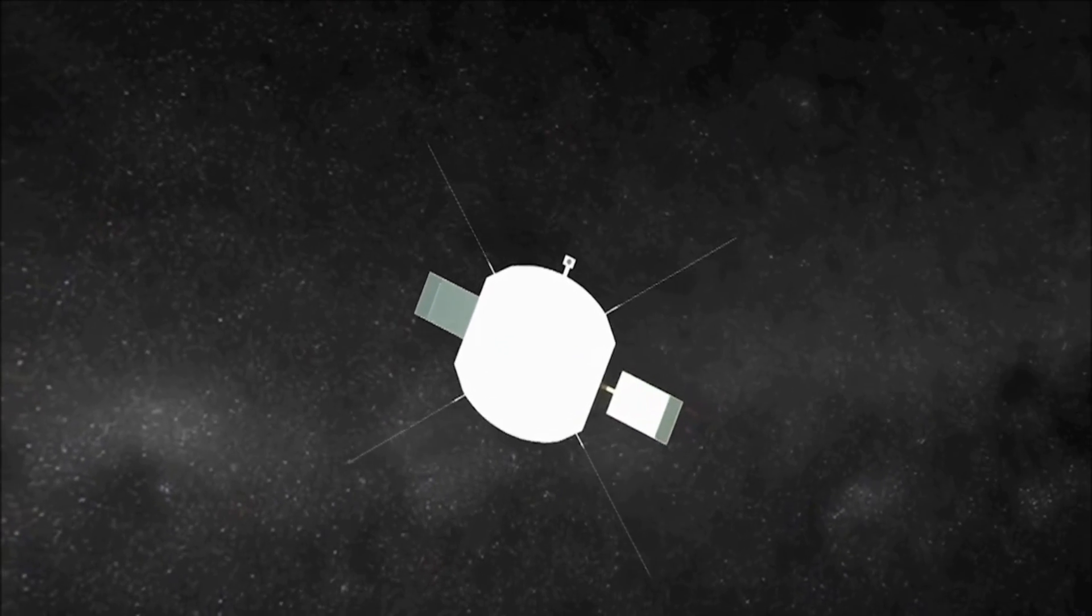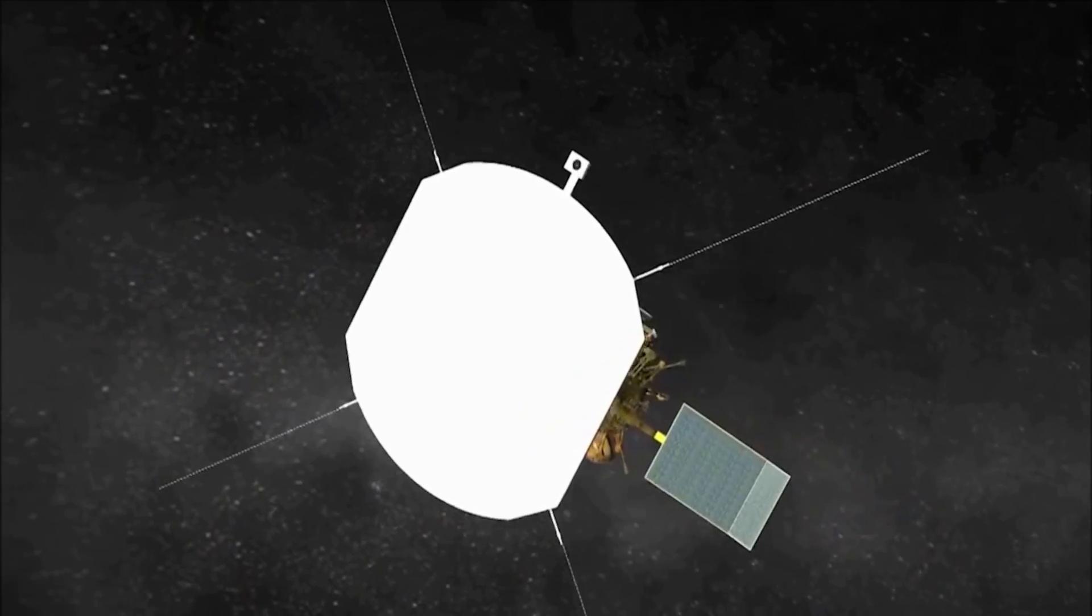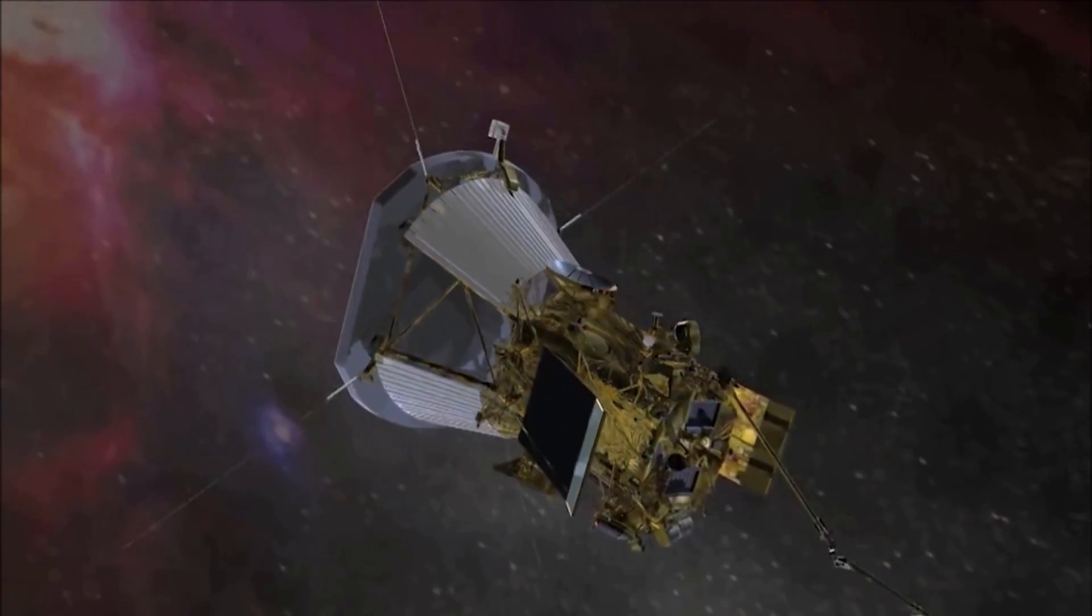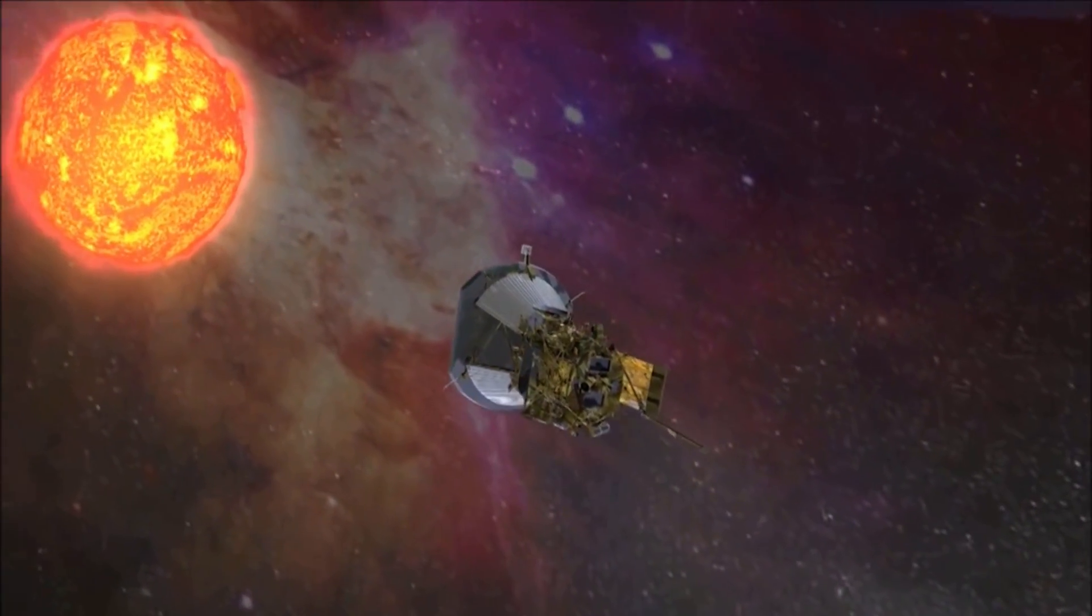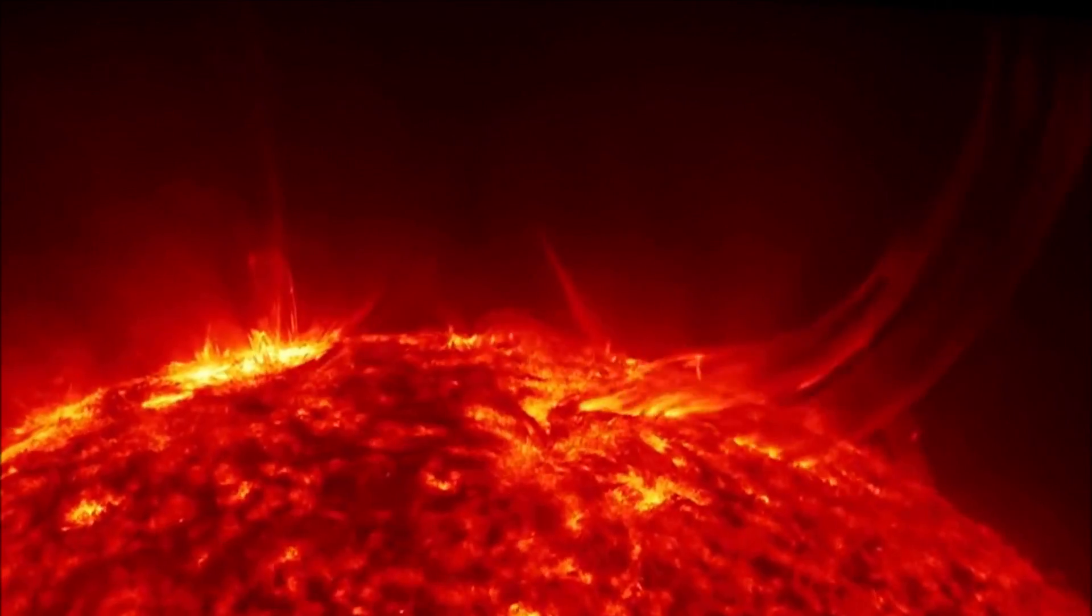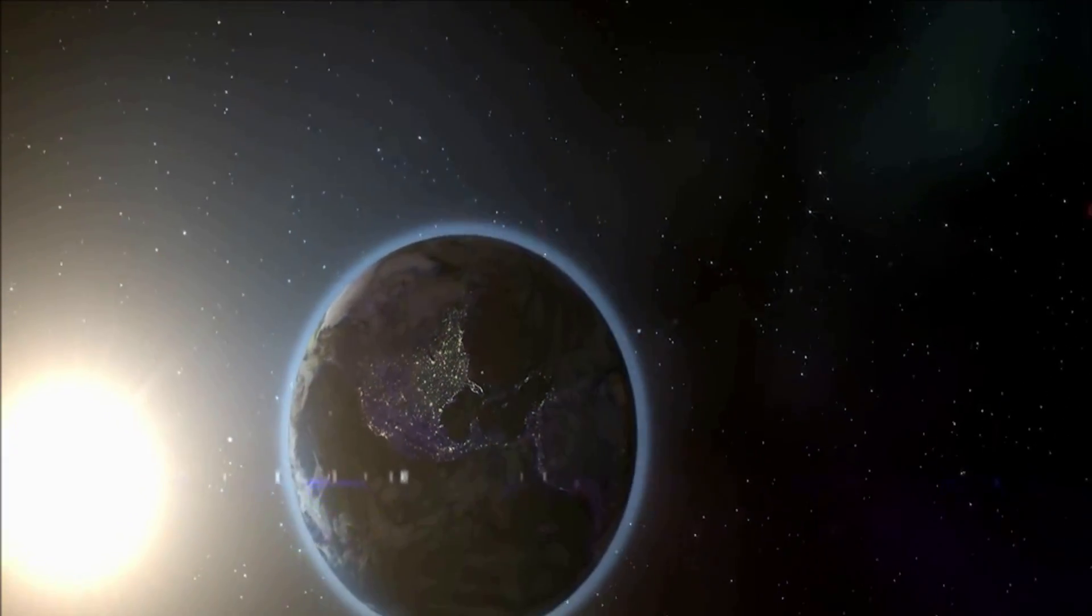For reasons currently unknown, the corona is hundreds of times hotter than the surface of the Sun, with temperatures at 500,000 degrees Celsius or higher. It's also behind the solar wind, a constant stream of charged particles that can impact life here on Earth.